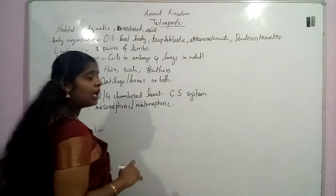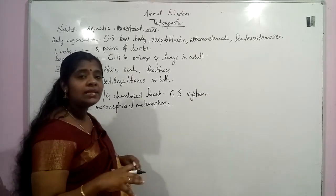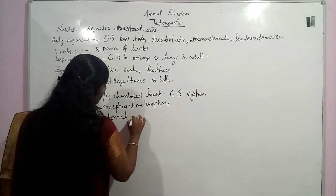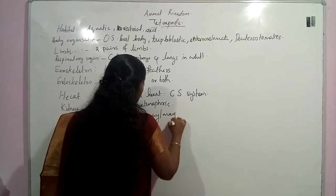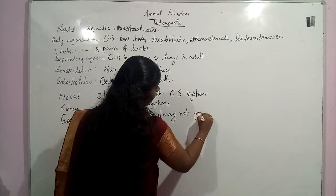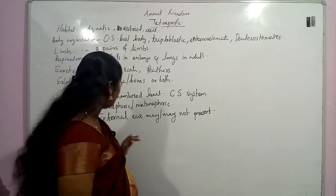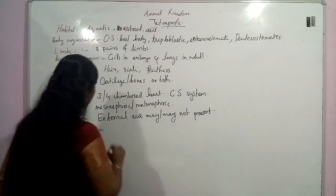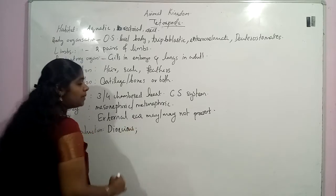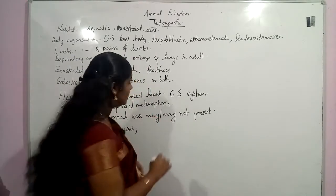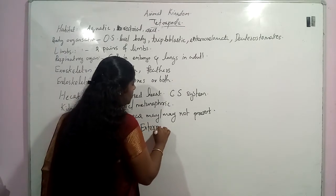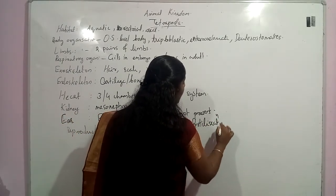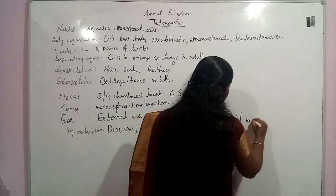The external ear may or may not be present in this group. But the middle ear will be present. Reproduction: they are unisexual or dioecious organisms. They will undergo either external or internal fertilization. Direct or indirect development occurs in this group of organisms.